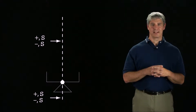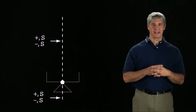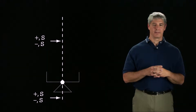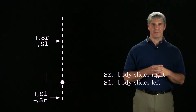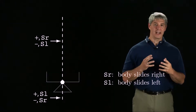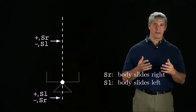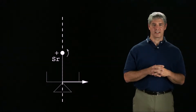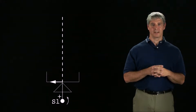For planar problems, sliding contacts can be further classified as left sliding, where the body slides left relative to the constraint, or right sliding, where the body slides right relative to the constraint. With this distinction, we can refine the labels of rotation centers on the contact normal to be SL, where the body slides left, or SR, where the body slides right. For example, this positive rotation center causes the body to slide to the right relative to the triangular constraint, while this positive rotation center causes the body to slide to the left relative to the constraint.